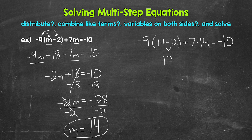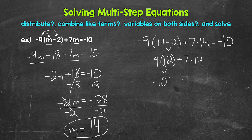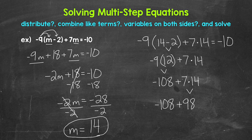Let's start with the parentheses: 14 minus two gives us 12. Then we do multiplication: negative nine times 12 gives us negative 108, plus seven times 14, which gives us 98. So we have negative 108 plus positive 98, which gives us negative 10. So 14 is correct — that's our solution: m equals 14.